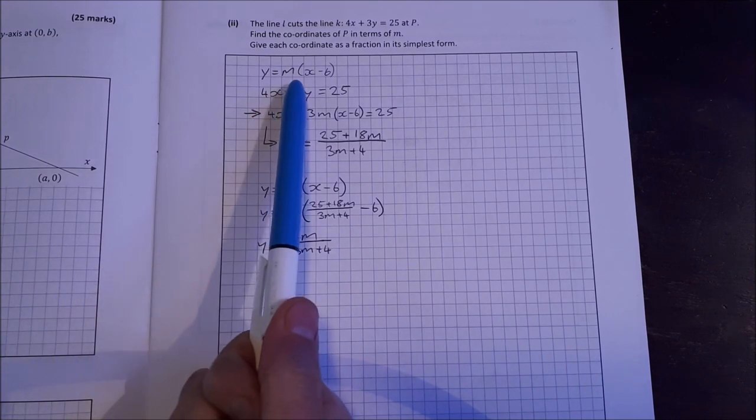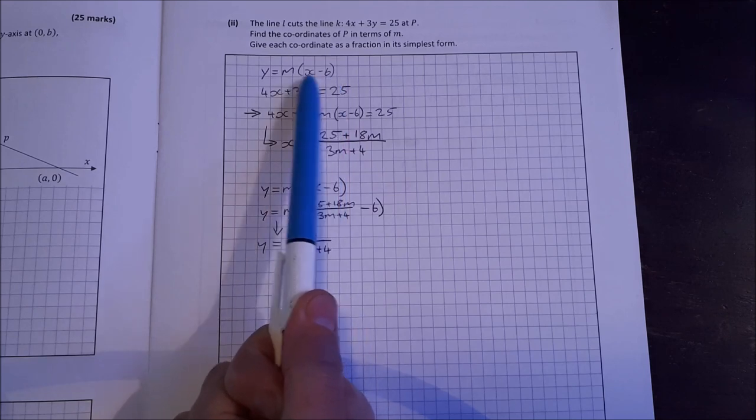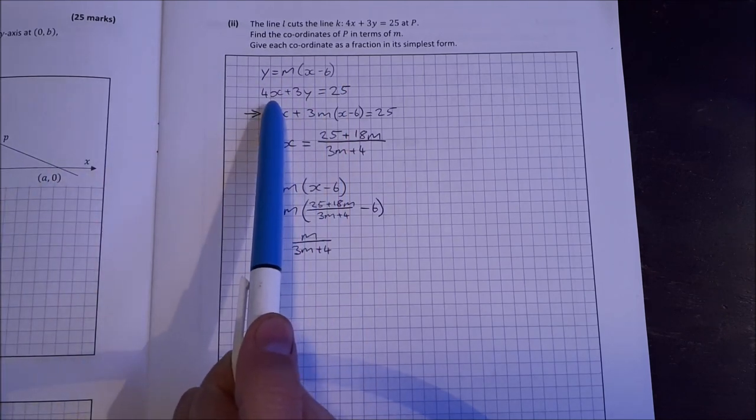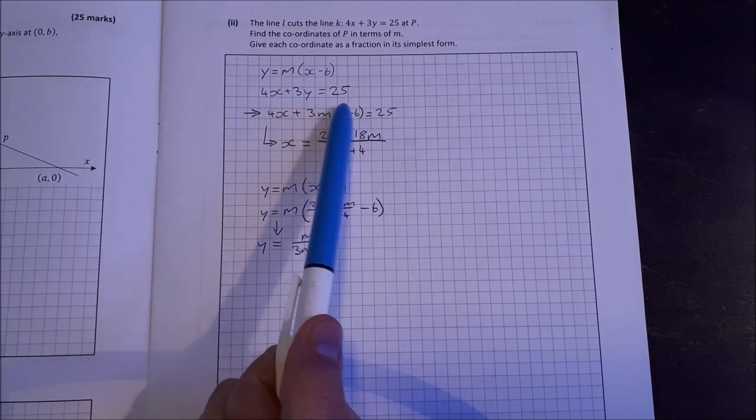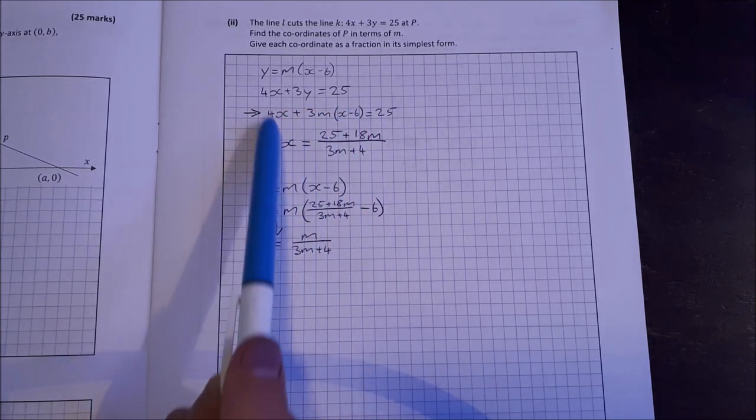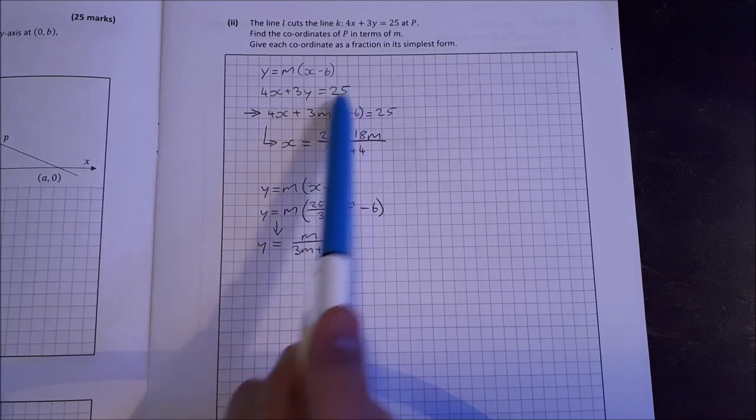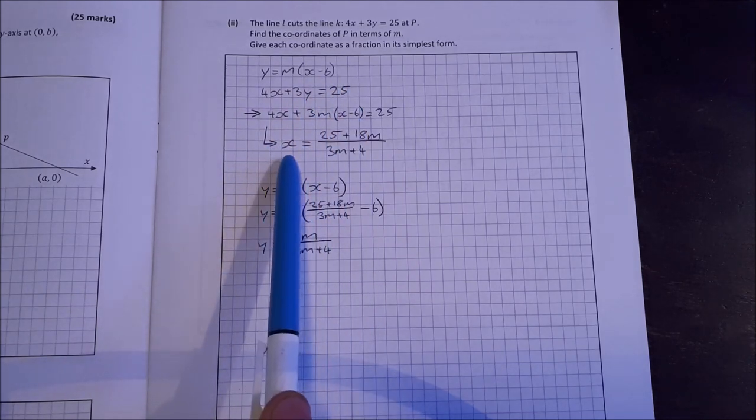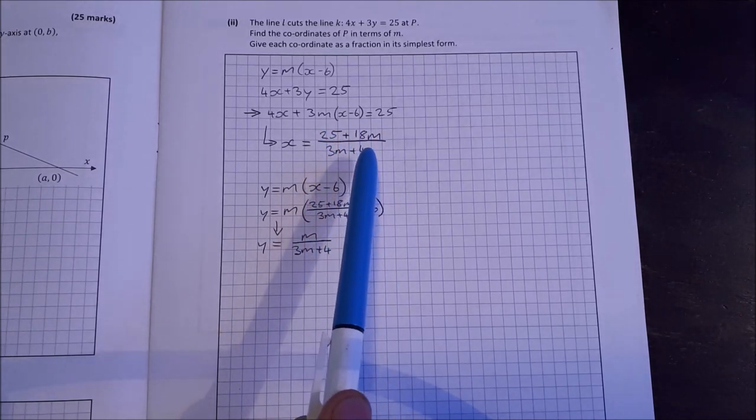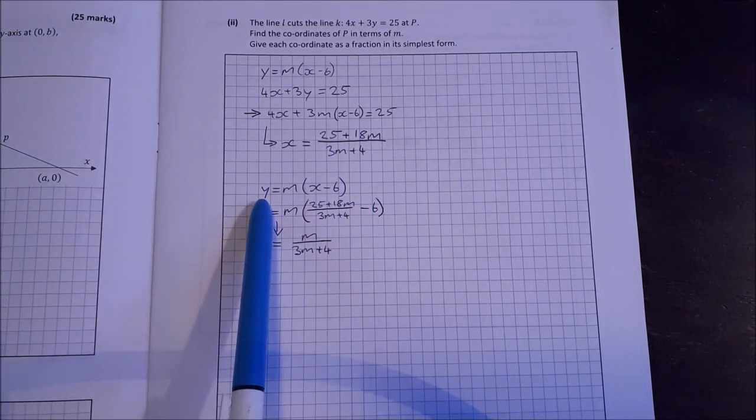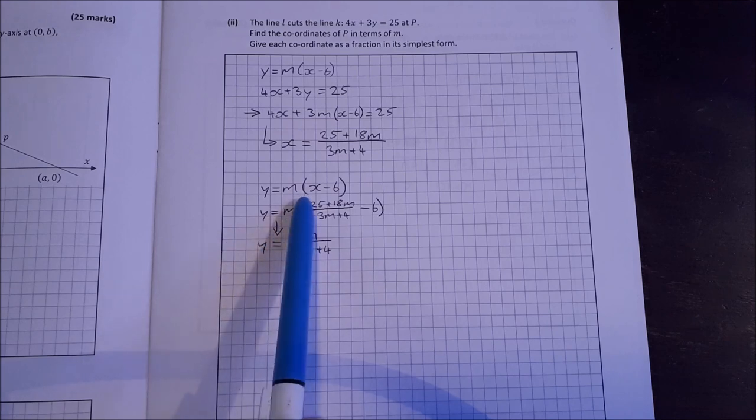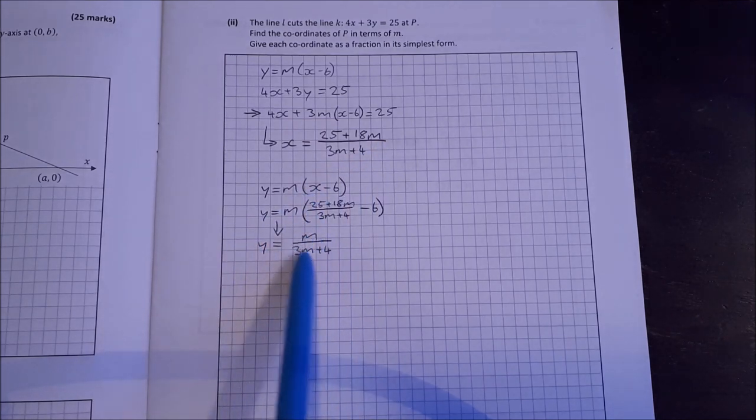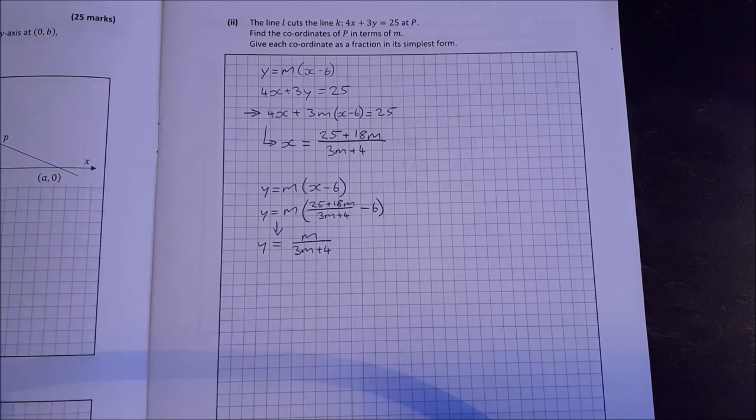Find the coordinates of P in terms of M and give each coordinate as a fraction in its simplest form. So y is equal to M times x minus 6. We can sub in M times x minus 6 in instead of y. Get x on its own. There's x in terms of M and then get y in its own and sub in x and get y as M over the 3M plus 4.